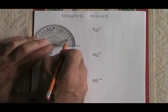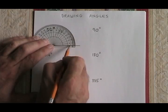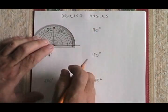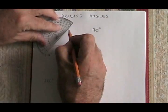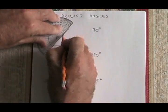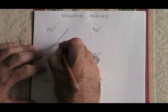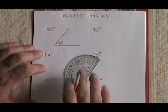And then counting up from zero, which means this time I'm using the inner numbers on the protractor, I go up to 50 and I put a line there that shows a 50 degree angle with the line that I already drew. It is that easy to draw a 50 degree angle.